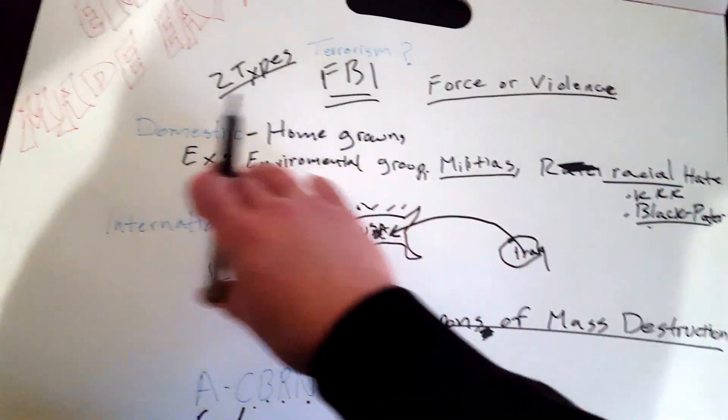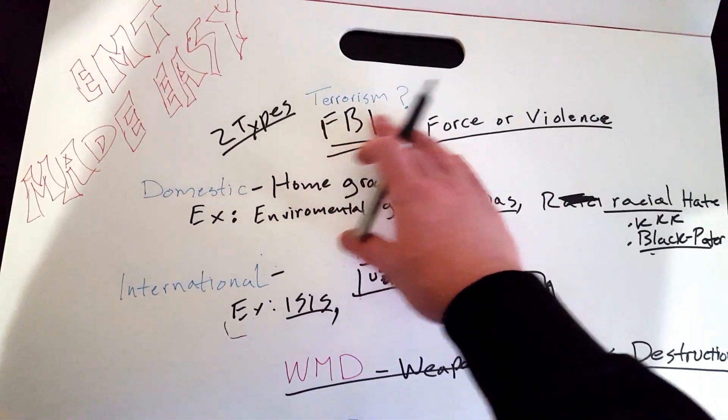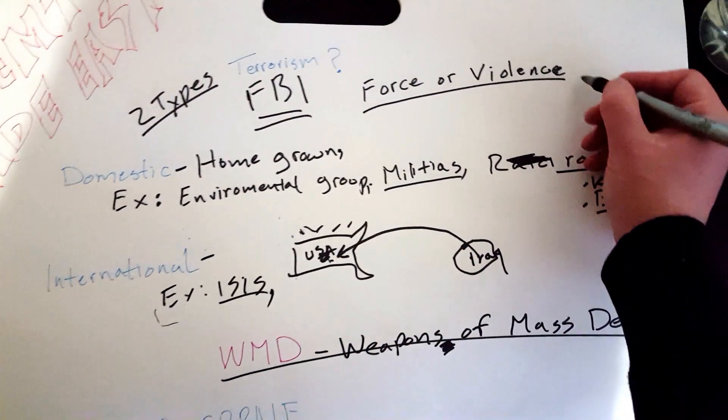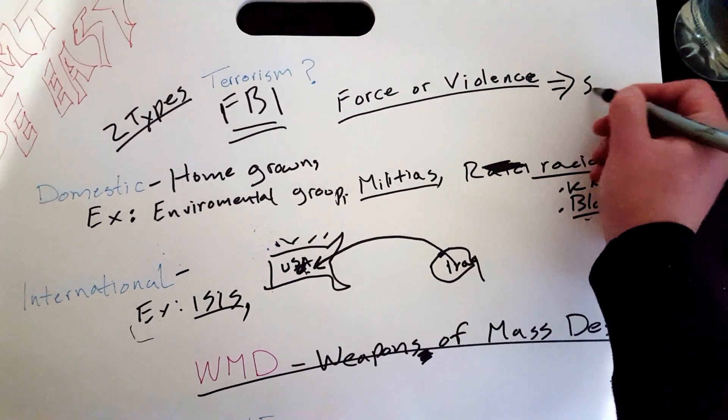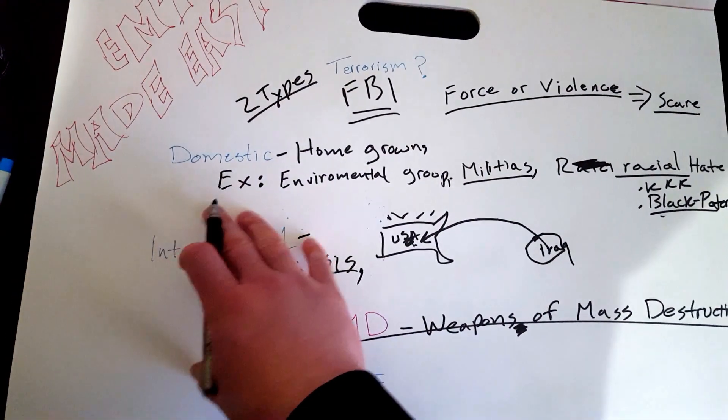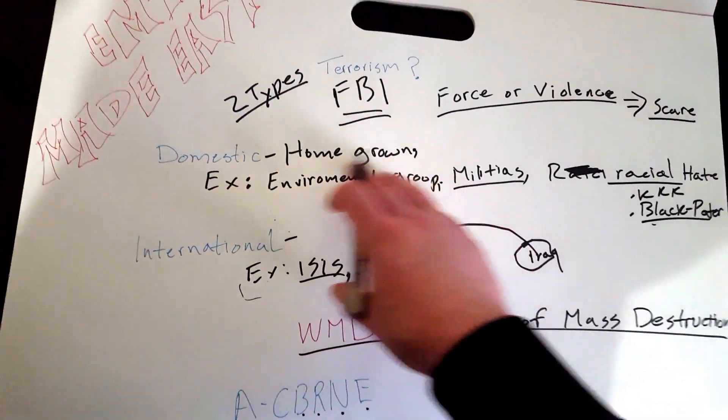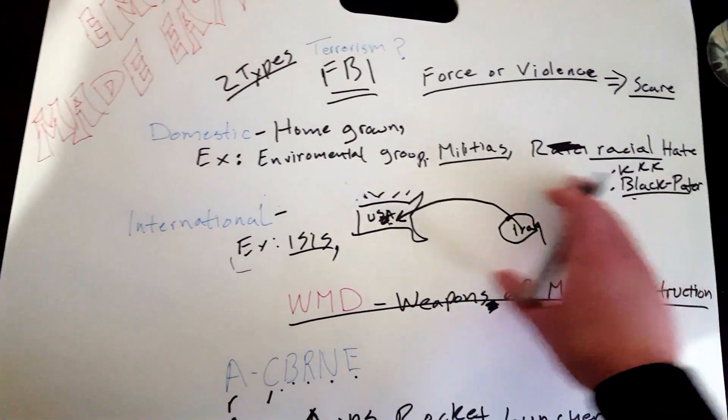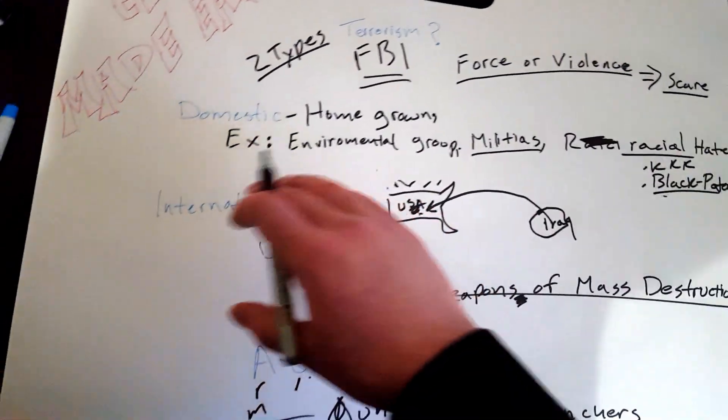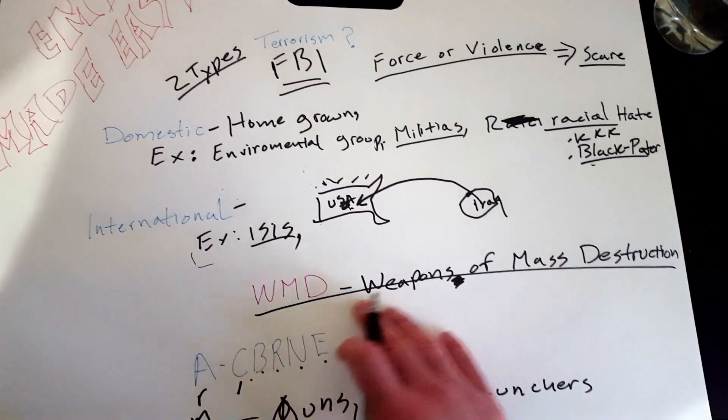But for now, the biggest point or the biggest thing that I want to get across with this video is just what terrorism is. It's a group of individuals or an individual—they use force or violence to scare people, to scare or intimidate people or governments. There are domestic terrorism and international terrorism. Domestic means that they are homegrown. International means that they are not from the region or nation that they are actually attacking.